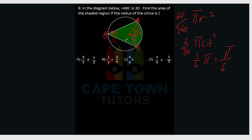We've worked out the sector area. Now we need to figure out the area of the other shaded part outside the sector. We'll work with the triangles, using straight lines to measure so we can work a bit more clearly.